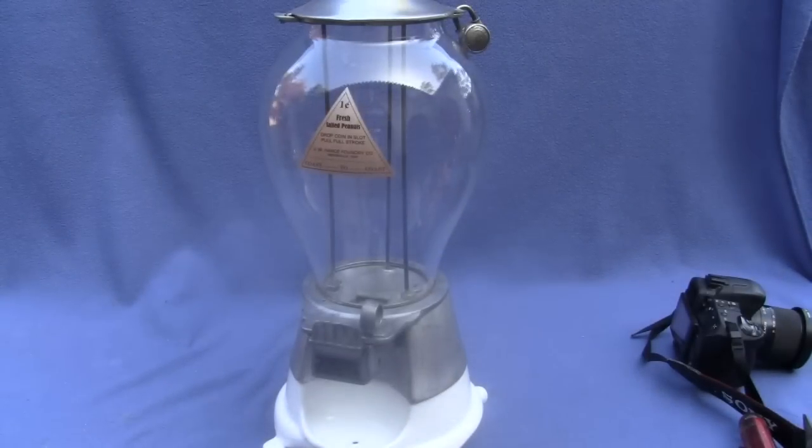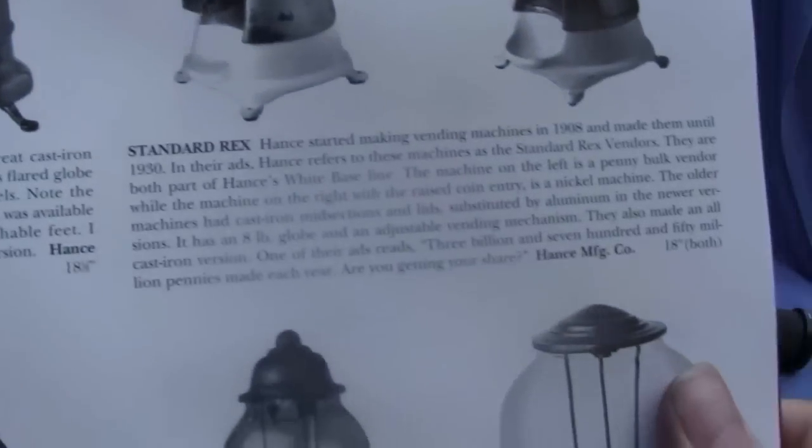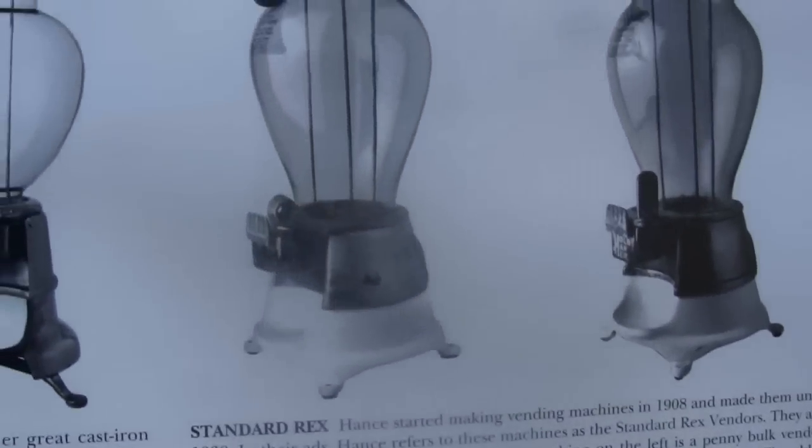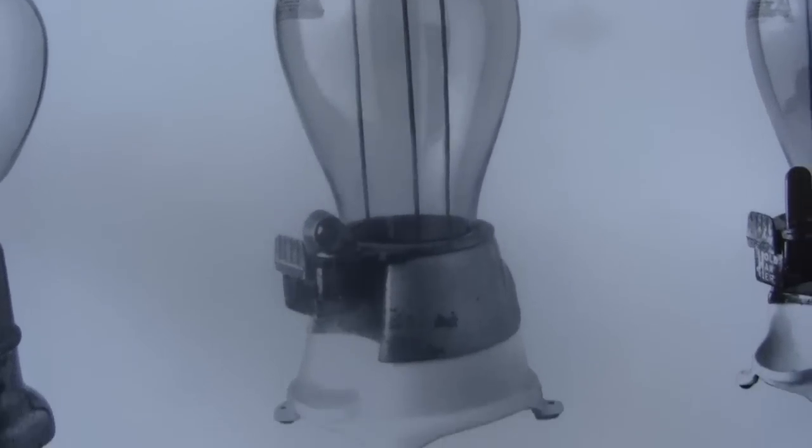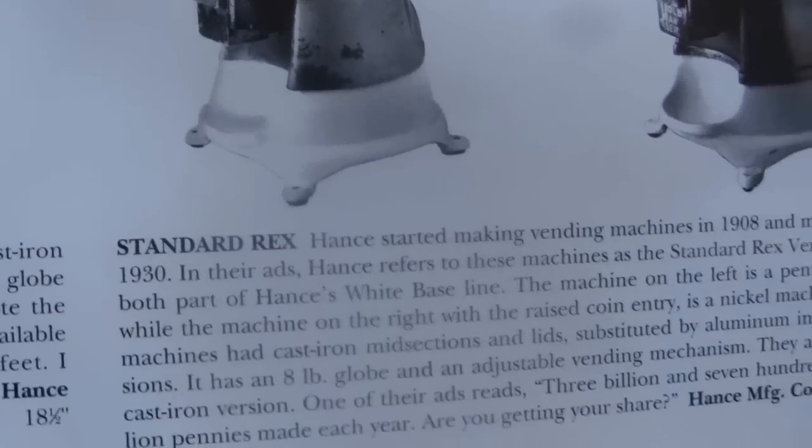And this gum machine is in the Silent Salesman 2 book on page 73. It's that one right there. Same globe, decal, everything.